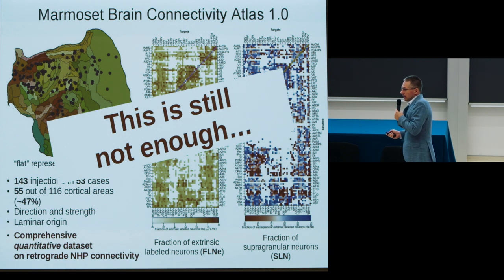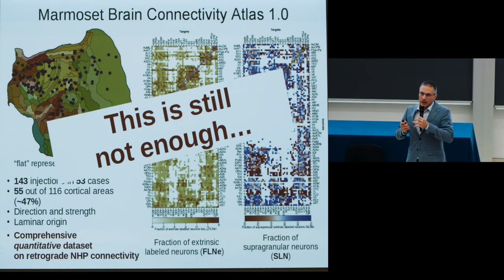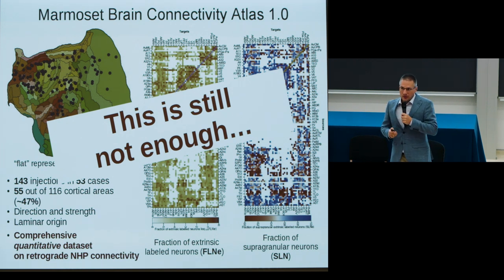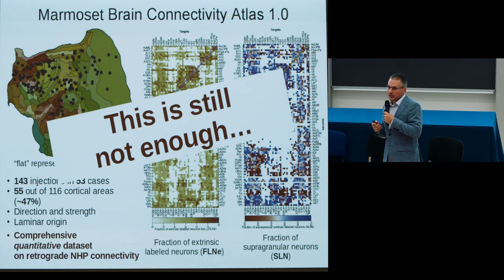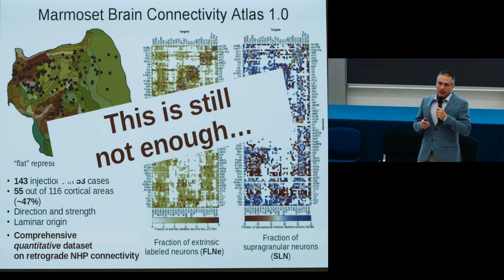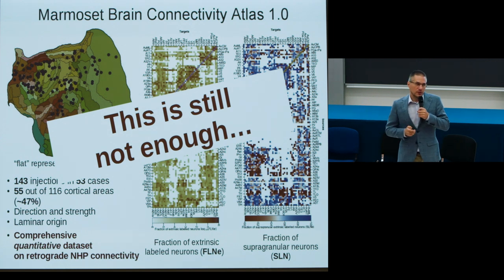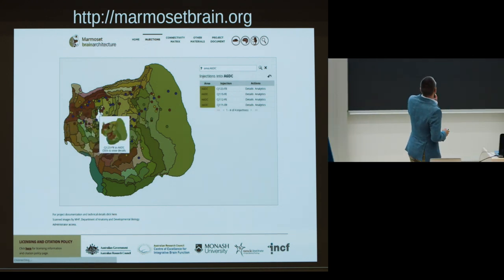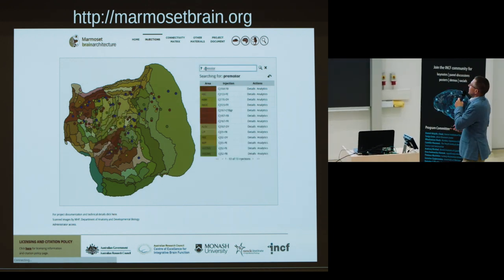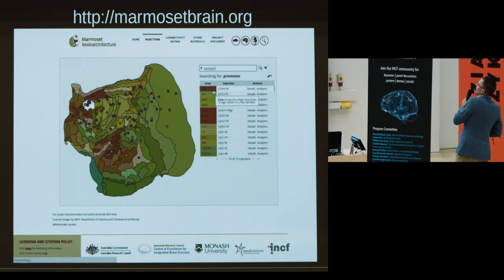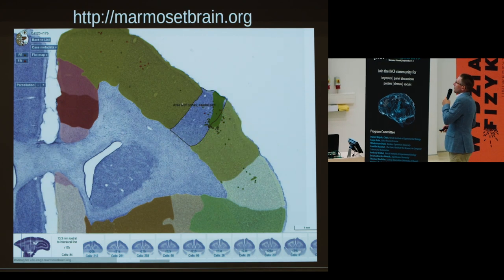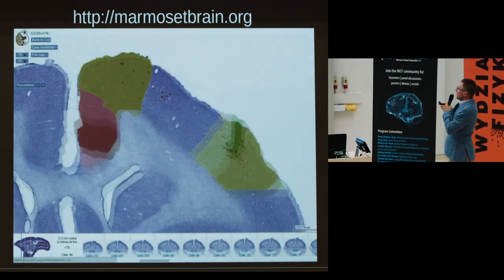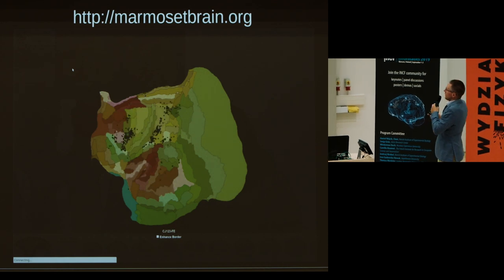Getting the data alone is not enough—an ideal resource should go well beyond this point, by providing researchers with means of accessing and exploring the data, and by adding additional layers of data to better contextualize connectivity results. To address this, we developed the marmosetbrain.org portal, which has a sleek interface allowing you to pick any of the 143 uploaded injections and investigate the underlying high-resolution histology, check locations of individual labeled neurons, and view overall connectivity patterns using the flat map view.